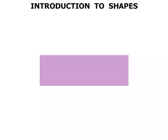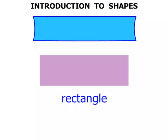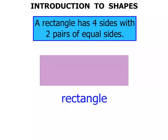What about this shape? This is a rectangle. Now, a rectangle has four sides, with two pairs of equal sides.